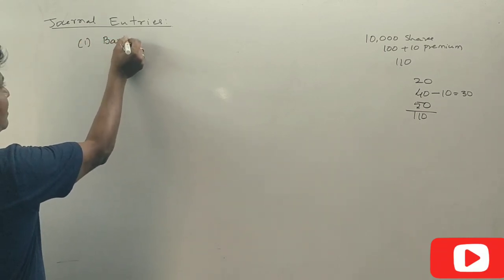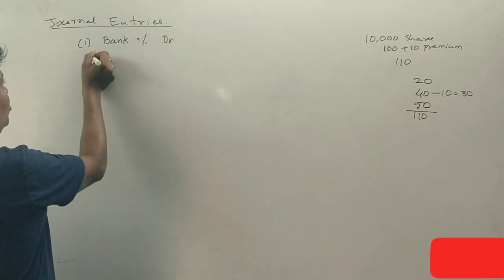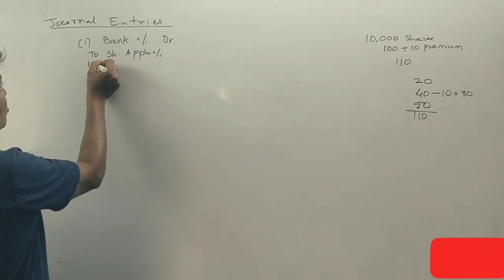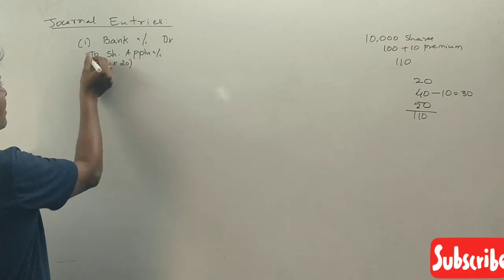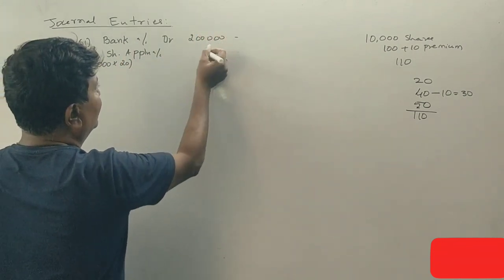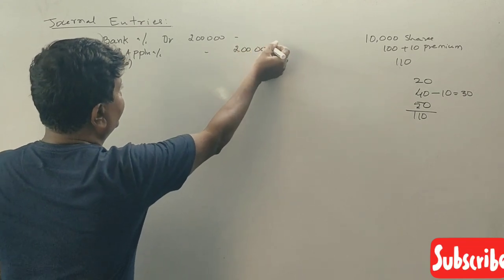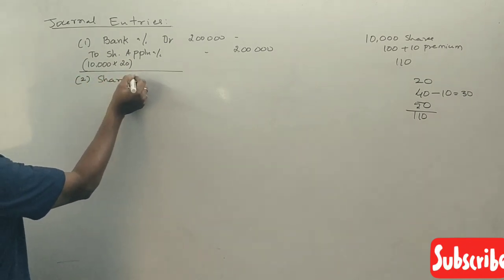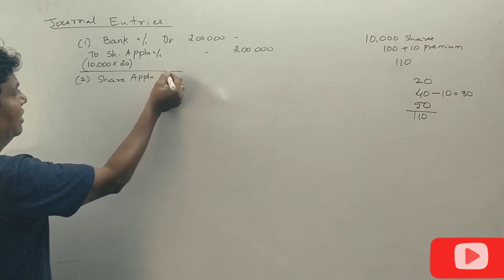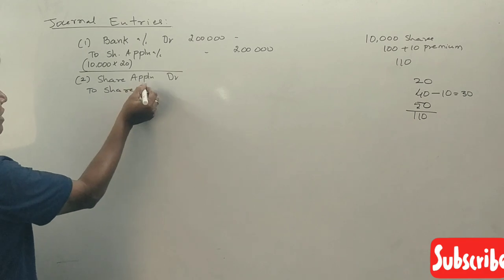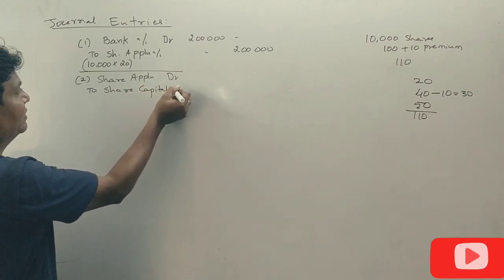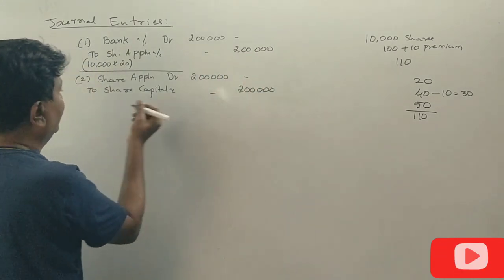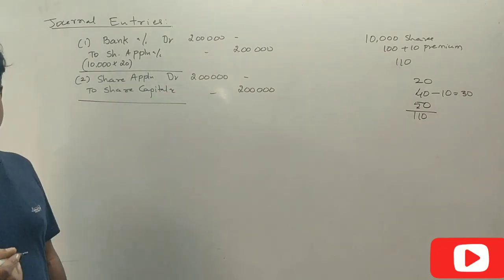Bank account debit to share application account: 10,000 into ₹20 rupees equals ₹2 lakhs. Then share application account debit to share capital account — same amount, ₹2 lakhs. Narration: being share application money transferred to share capital account.